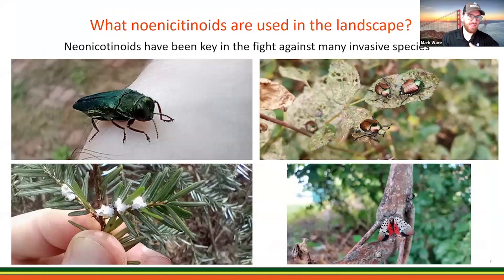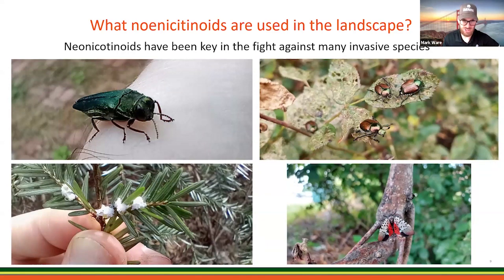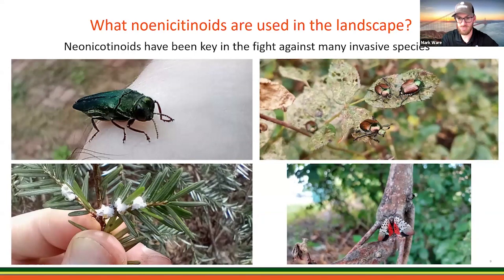The reason we love these things is because they are a staple of our pest management toolbox, especially when it comes to a lot of our invasives. For those of us dealing with spotted lanternfly, hemlock woolly adelgid, Japanese beetles, or emerald ash borer — these are all significant pests that neonics do a fantastic job of managing. Without neonics, there's a good chance we wouldn't have as many live hemlocks or ash trees, because these tools have been so valuable for preserving the health of these important trees.